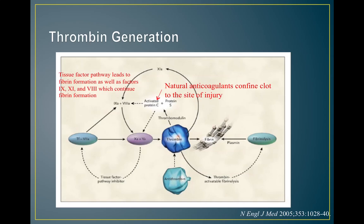This is another way to depict what thrombin does and how it's generated. The tissue factor pathway leads to thrombin formation and also to the formation of factors 9, 11, and 8. Thrombin provides feedback to these three factors to continue fibrin formation. Your body's natural anticoagulants — activated protein C and protein S — help confine the clot to its site of injury so it doesn't spread elsewhere.